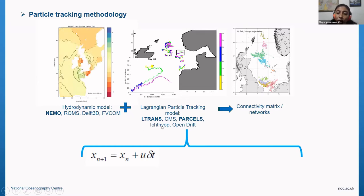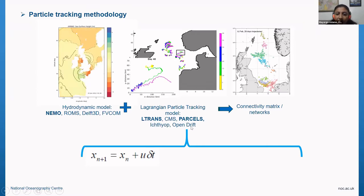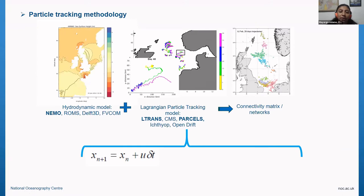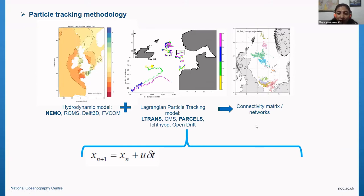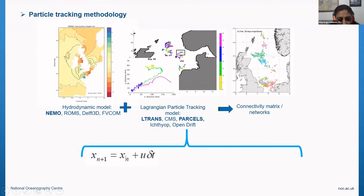ICTEOP is mainly for fish and larvae. And OpenDrips is also generic, but maybe a little bit focused on oil dispersion. The equations that these models are solving are really very simple.